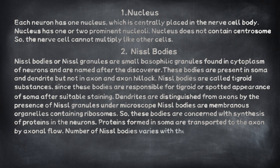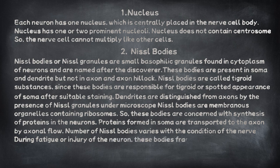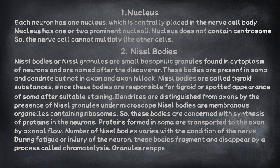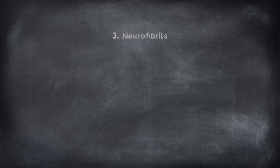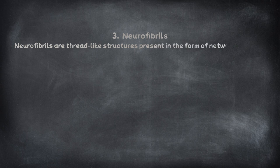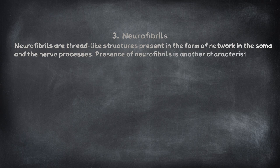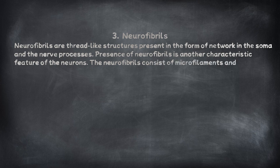The number of Nissl bodies varies with the condition of the nerve. During fatigue or injury of the neuron, these bodies fragment and disappear by a process called chromatolysis. Granules reappear after recovery from fatigue or after regeneration of nerve fibres. Neurofibrils are thread-like structures present in the form of a network in the soma and the nerve processes. Their presence is another characteristic feature of neurons, and they consist of microfilaments and microtubules.